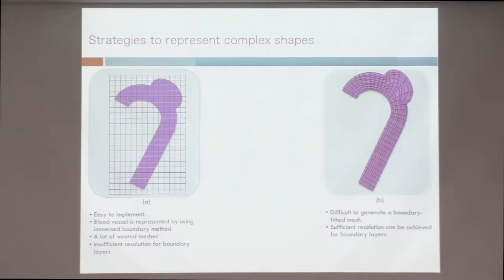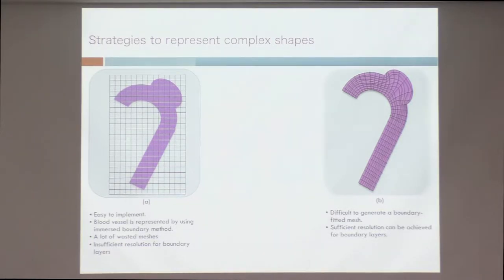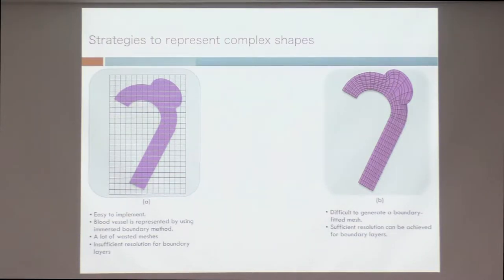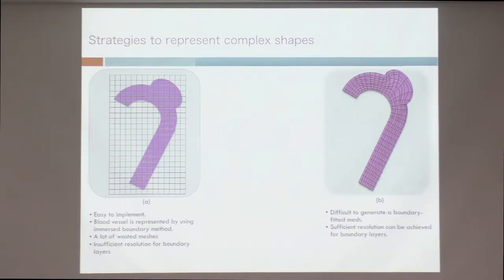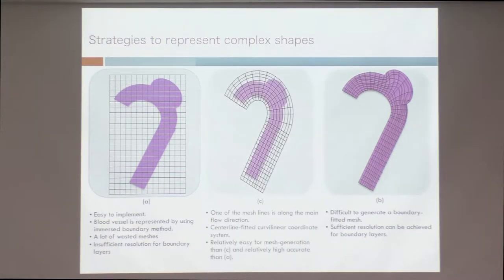For the immersed boundary method, blood vessels are represented using a volume penalization approach, but there are a lot of wasted mesh points outside the vessel and insufficient resolution for boundary layers. Another strategy is boundary-fitted mesh, which achieves sufficient resolution for boundary layers but is very time consuming and difficult to generate. I think there is a hybrid approach that balances these trade-offs.